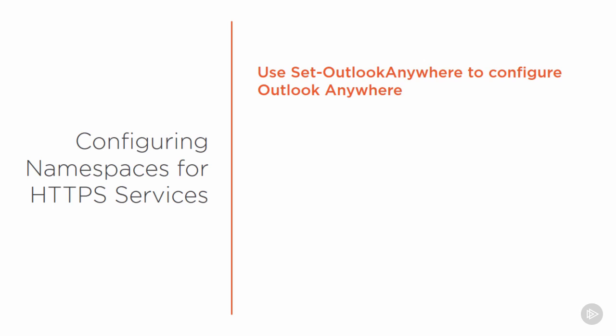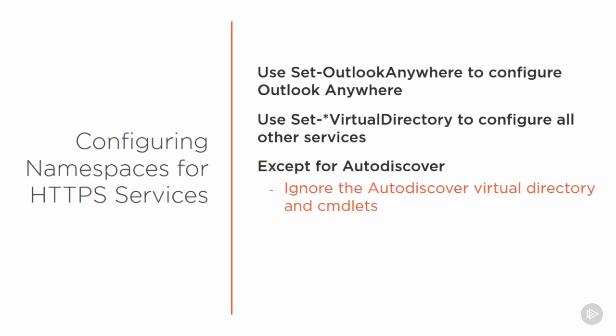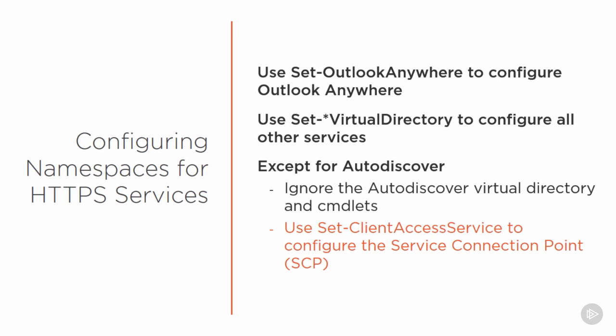To configure each of those namespaces, we'll use PowerShell cmdlets. The Set-OutlookAnywhere cmdlet configures Outlook Anywhere, and all other services use a Set Virtual Directory cmdlet — for example, Set-OWAVirtualDirectory for OWA. The exception is Autodiscover: although a Set-AutodiscoverVirtualDirectory cmdlet exists, internal and external URLs configured there are ignored by Exchange. Instead, we use the Set-ClientAccessService cmdlet to configure the Autodiscover Service Connection Point (SCP).